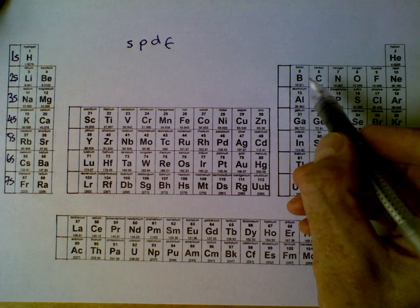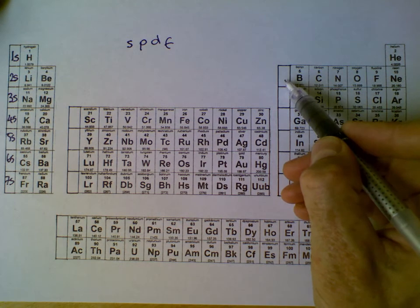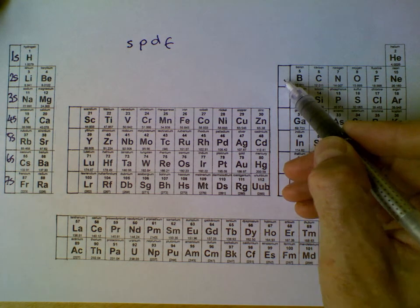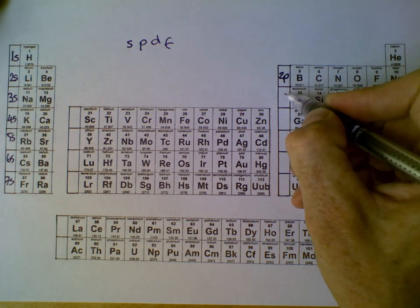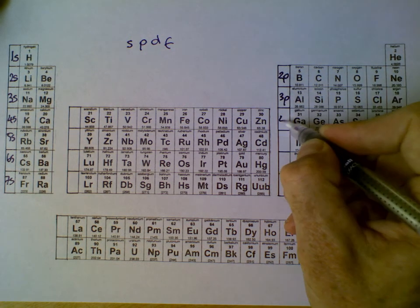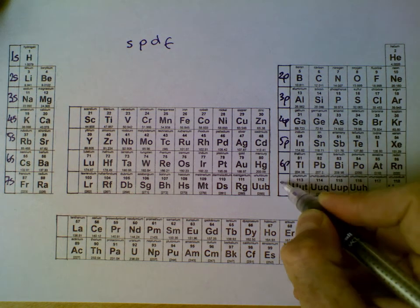We then move to the next columns along, the next tallest set of columns. And those are P's and those begin with 2. So we number these 2P, 3P, 4P, 5P, 6P, and 7P.